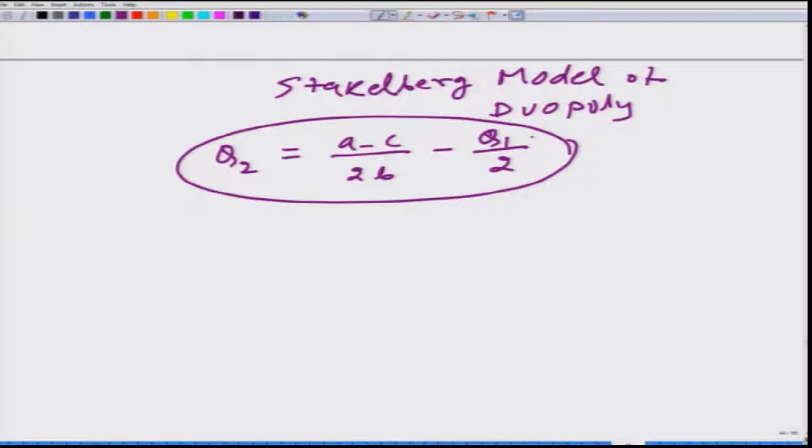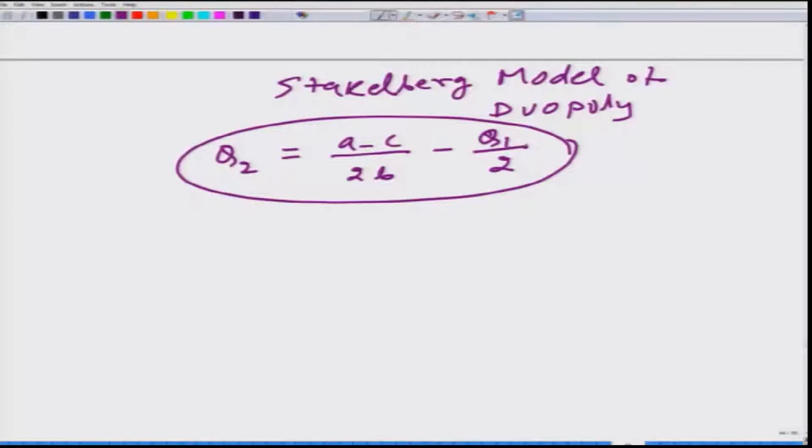So firm one rather than thinking about how much Q2 would be in the market, firm one would know that if it produces Q1, Q2 would be given by this particular equation.